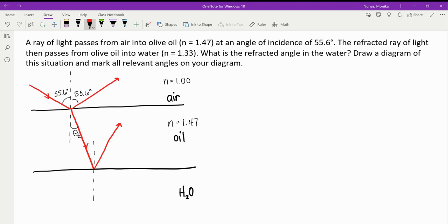For the refracted ray, we want to pay attention to the fact that we're going from a higher index of refraction, 1.47, to a lower index of refraction, 1.33. When that happens, we've learned that light bends away from the normal, or that my angle here, I'll call this one theta 3, should be larger than my angle of incidence right here.